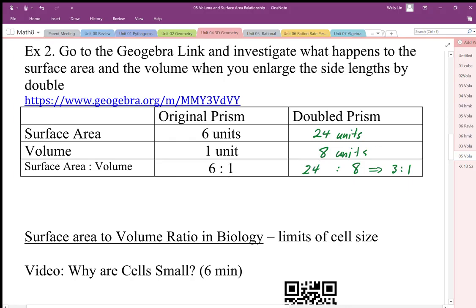to 24:8, or reduced, 3:1. So when we double the length, width, and height of any object, we make the surface area smaller by a factor of two. We went from 6:1 to 3:1.